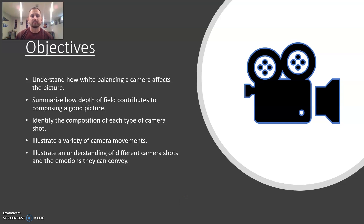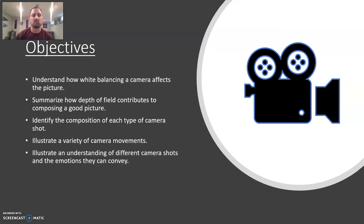So to dive into what our objectives are going to be in this lesson: understand how white balancing a camera affects the picture and what that is; summarize how depth of field contributes to composing a good picture; identify the composition of each type of camera shot; illustrate a variety of camera movements; and illustrate an understanding of different camera shots and the emotions they can convey.